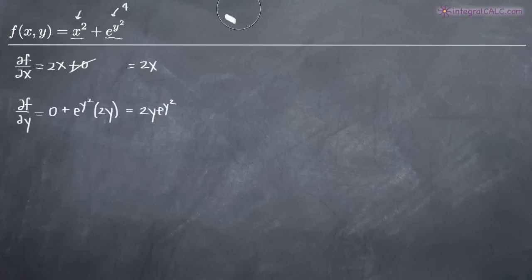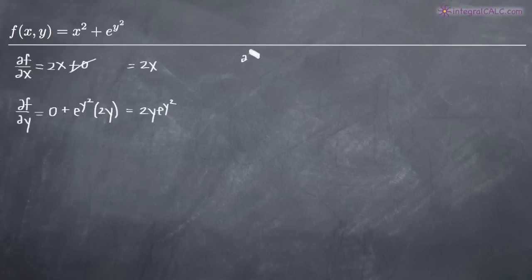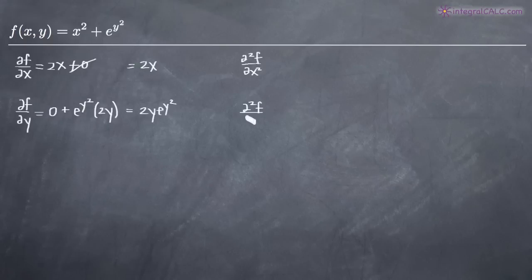So we've got our first order partial derivatives: the partial with respect to x equals 2x, and the partial with respect to y equals 2y e to the y squared. Now we need to go ahead and calculate our second order partial derivatives. The notation for the second order partial derivative with respect to x uses x squared, and with respect to y uses y squared.